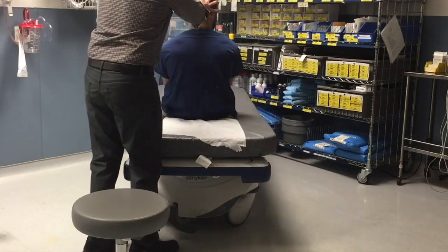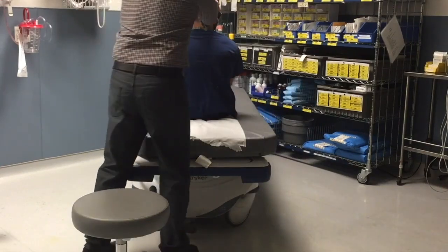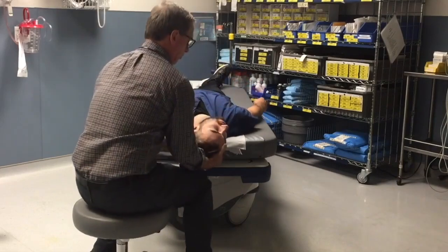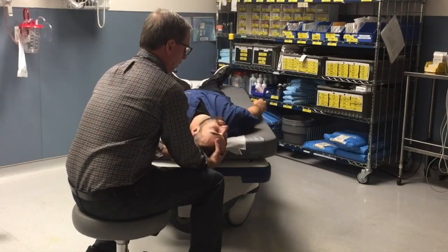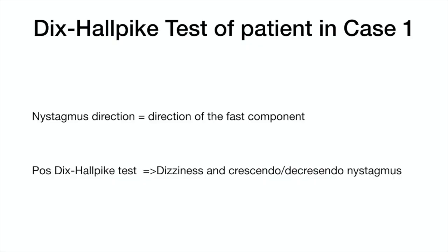The direction of the nystagmus is defined by the direction of the fast beating component. In a positive Dix-Hallpike test, the patient will complain of dizziness and you will observe nystagmus in a crescendo-decrescendo pattern.